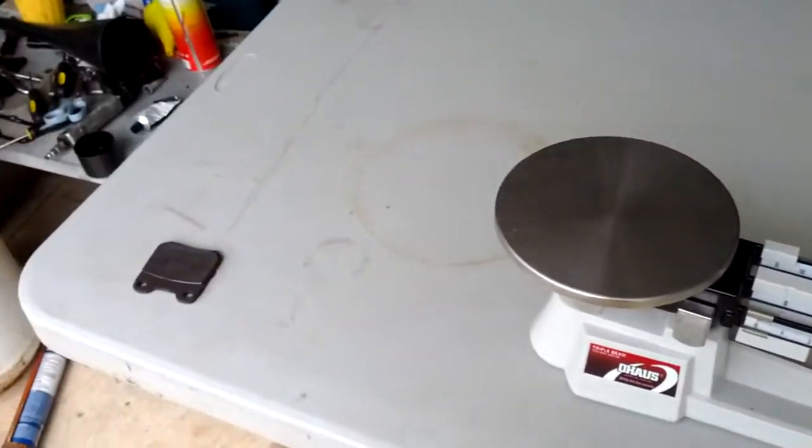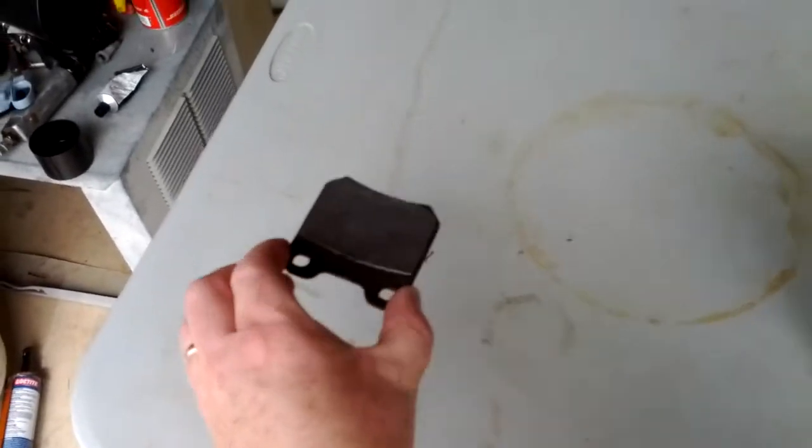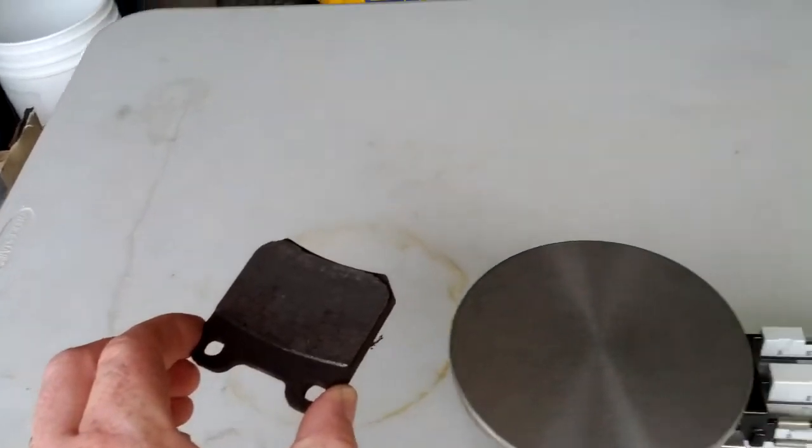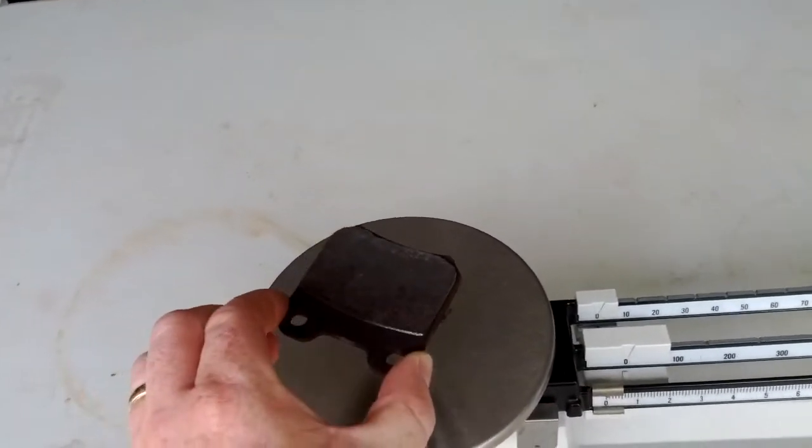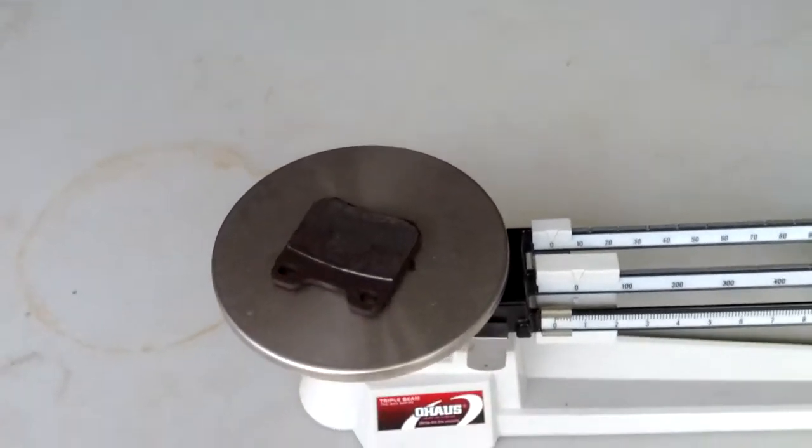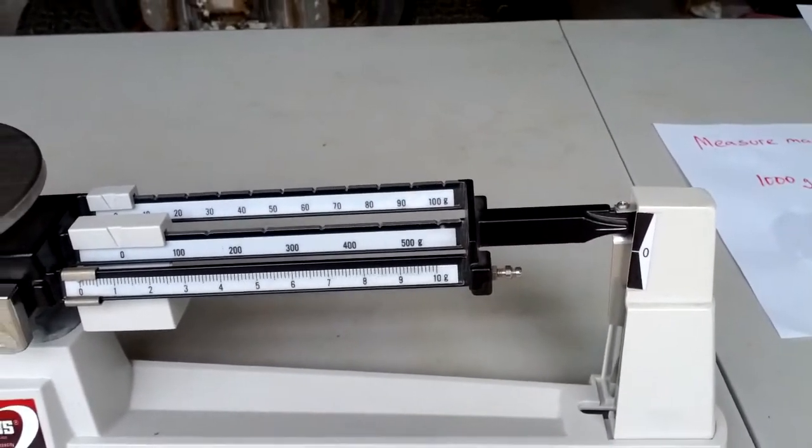To measure mass with a triple beam balance, you need an object that you're going to find the mass of. I have here an old brake pad off of a car. So you put whatever it is, you're going to find the mass of gently on the pan. Again, you don't slam it down. And you see that it pushed the beams all the way up to the top.